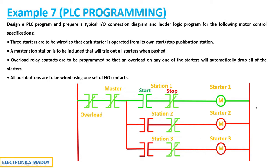We've energized station one's starter one by pressing the start button. Now if we press the stop push button of station one, current stops flowing through this path because the normally closed contact, which was initially closed, acts as an open circuit once energized. Consequently, the starter corresponding to the motor gets de-energized — starter one of station one stops. So pressing start energizes the starter; pressing stop de-energizes it. The condition is satisfied for station one.